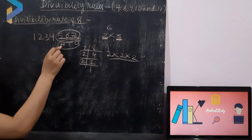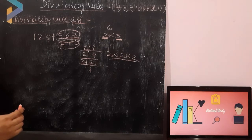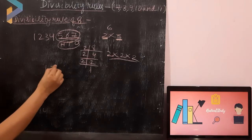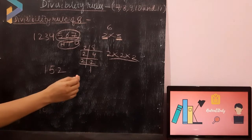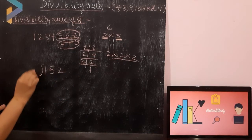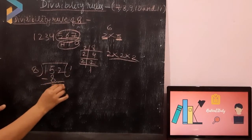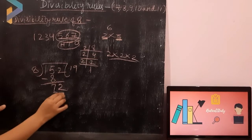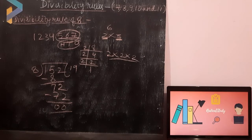Let's take some examples. As per the rule of 8, the first example is 152. Let's check whether 152 is divisible by 8 or not. We check the 1's, 10's, 100's digits and divide by 8. 8 ones are 8, 8 nines are 72. Yes students, so 152 is divisible by 8.